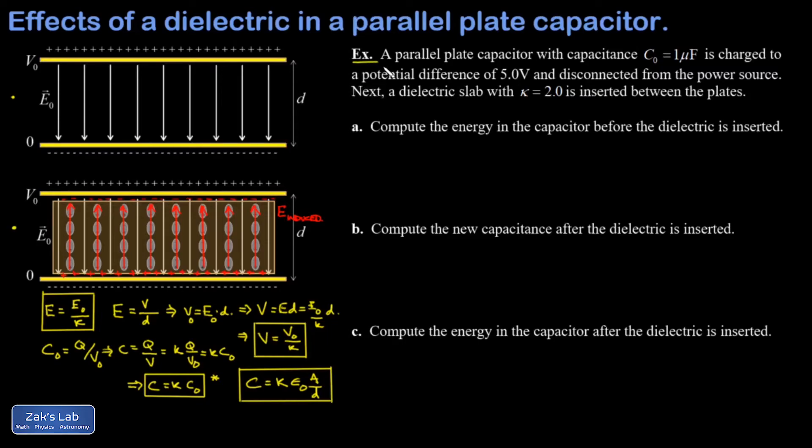We'll get to one of those examples in another video. For now, looking at a quick example of comparing a parallel plate capacitor with no dielectric to what happens if you put in a dielectric with constant 2.0 in between the plates, and we're primarily concerned with energy in this example.